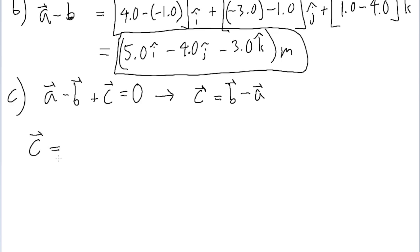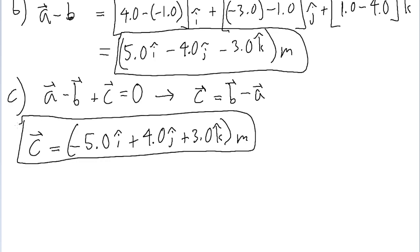So looking at what we found for part b, we found 5i minus 4j minus 3k. So our vector c is going to be the flip, the sign flip for each of those components. So instead of positive 5.0i, instead it's negative 5i. Instead of negative 4, it's positive 4j. And instead of negative 3k, it's positive 3k. And all of this with units of meters. And so that is our vector c. That's it for part c, and that is it for this problem.